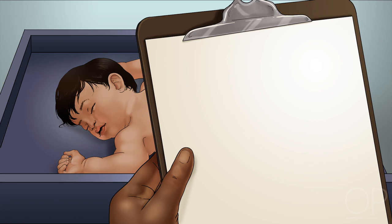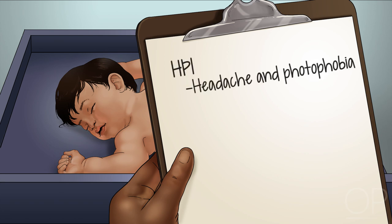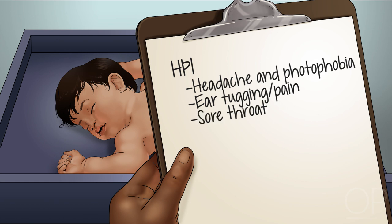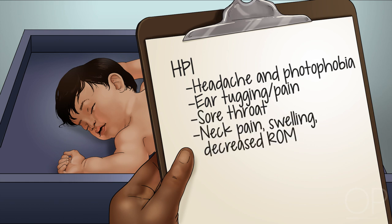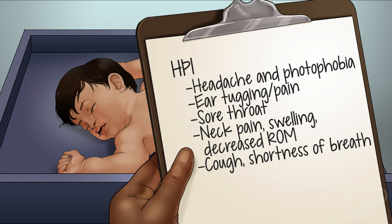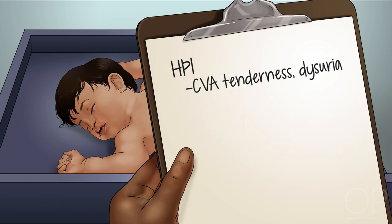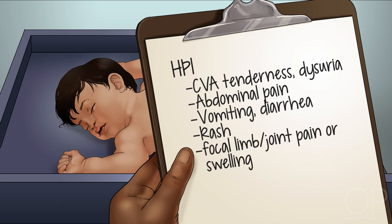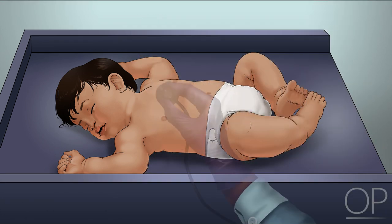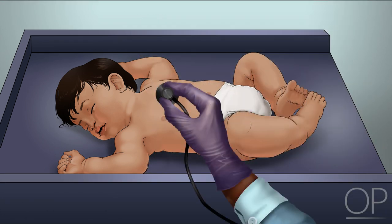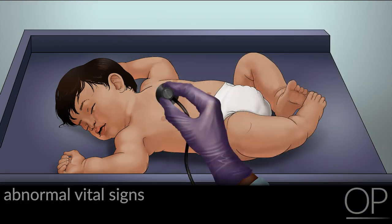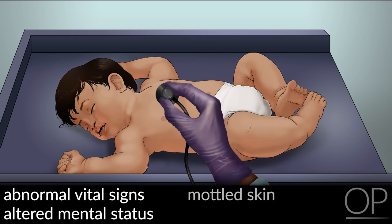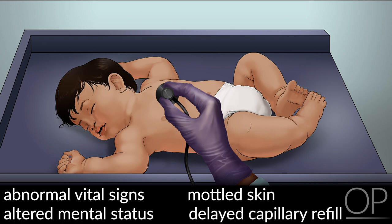In the pediatric history, important pieces of information to elicit include headache and photophobia, ear tugging or pain, sore throat, neck pain or swelling or decreased range of motion, cough and shortness of breath, costovertebral angle tenderness or dysuria, focal abdominal pain, vomiting or diarrhea, rash, or focal limb or joint pain or swelling. On exam, be mindful to assess for evidence of altered perfusion by evaluating for abnormal vital signs, altered mental status, mottled skin, or delayed capillary refill.